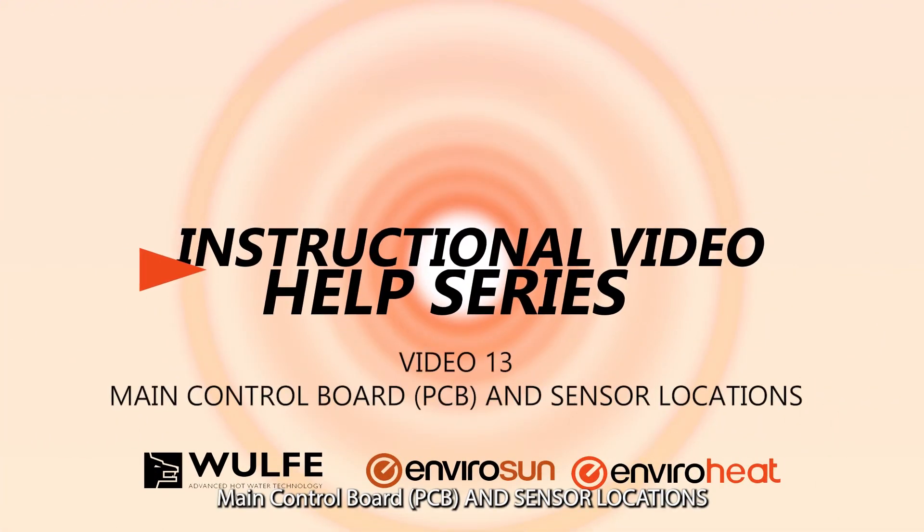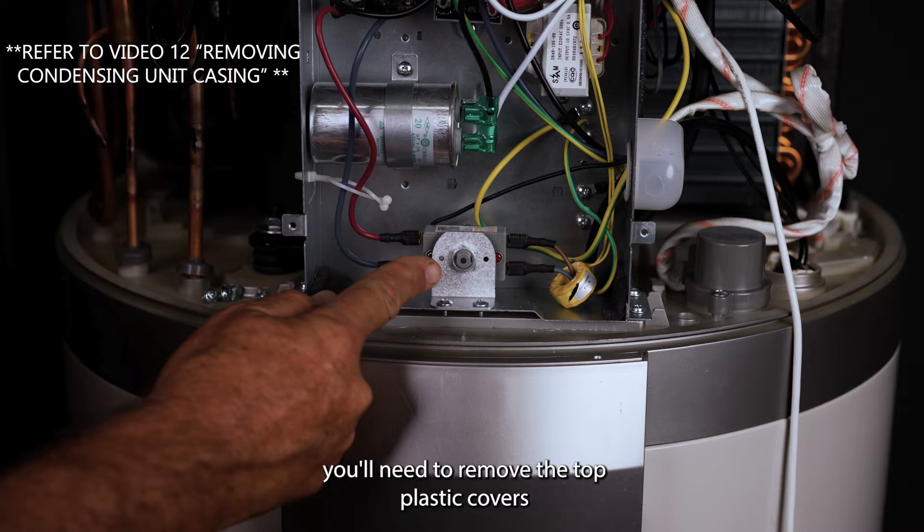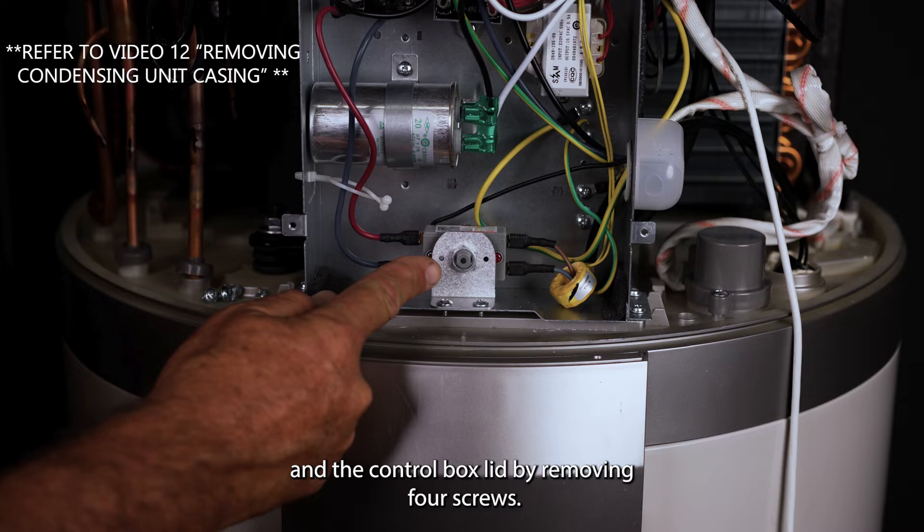Main control board PCB and sensor locations. In order to gain access to the system's control boards and sensors, you'll need to remove the top plastic covers and the control box lid by removing four screws.